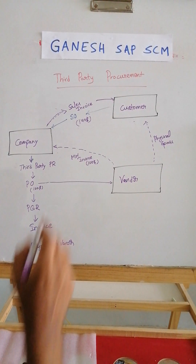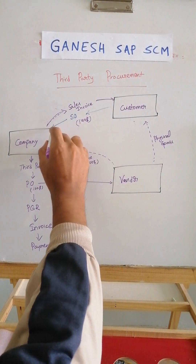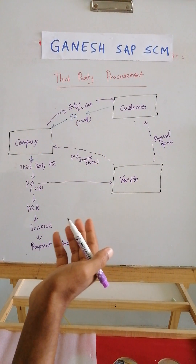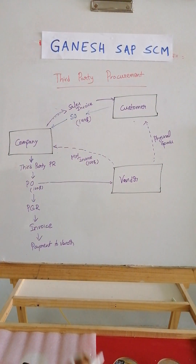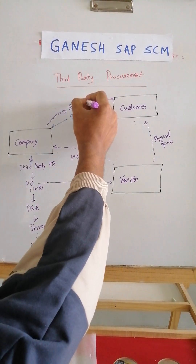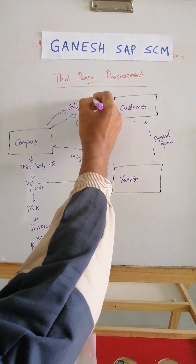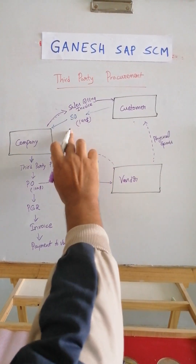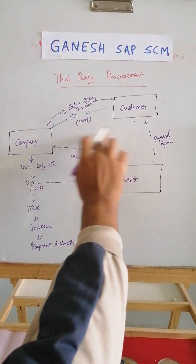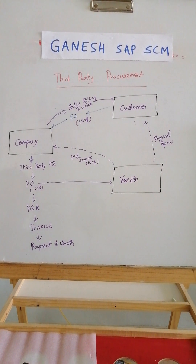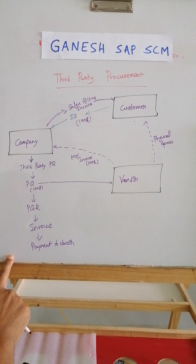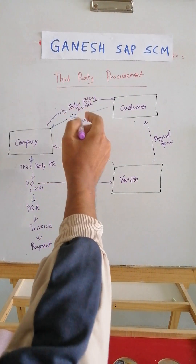On the sales side, you have a sales order and sales invoice. You can include an outbound delivery, or go directly from sales order to invoice. The sales cycle can be: sales order, delivery, PGI, and billing. On the procurement side, normal procurement will run in parallel, and the sales cycle will also run alongside.